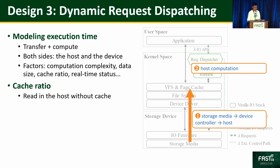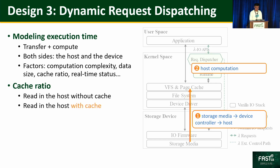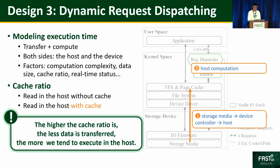Cache ratio means how much data has been cached in the host-side page cache. Without cache, pread_lambda on the host loads all data from the storage media through the device controller to the host, then computes. When the host caches partial data in the page cache, it needs to load less data from the device, so total execution time can be smaller. The higher the cache ratio, the less time is needed to transfer data, and the more Lambda I/O tends to execute the request on the host. Detailed modeling equations can be found in our paper.